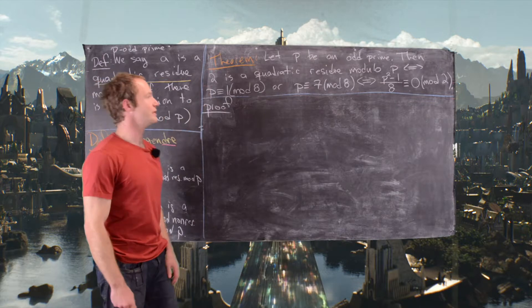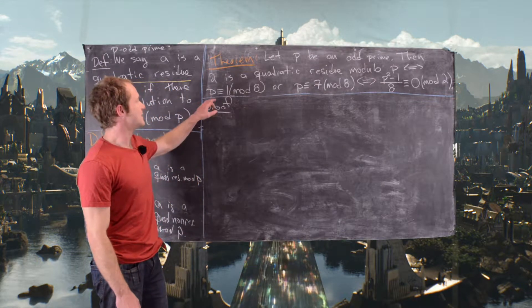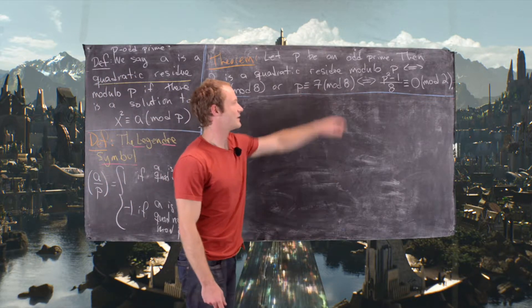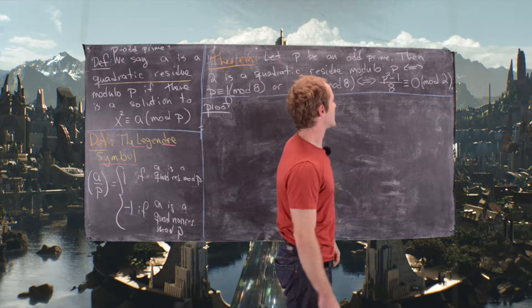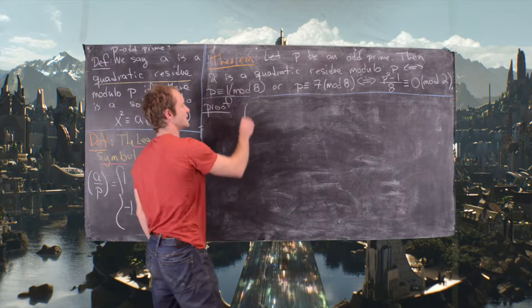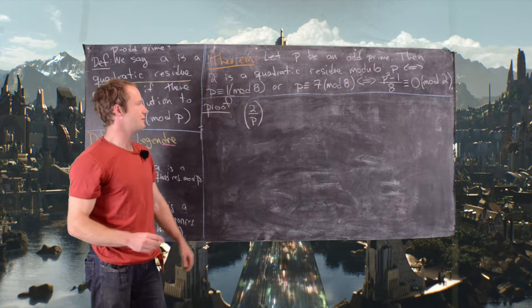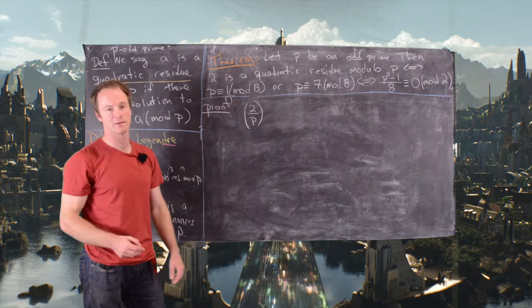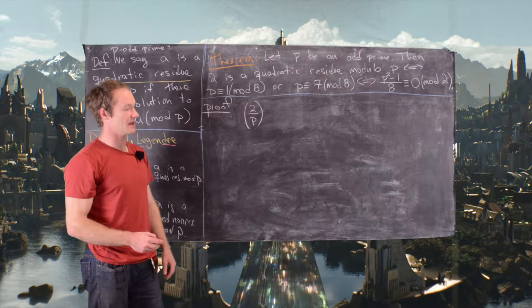The big theorem: if p is an odd prime, then 2 is a quadratic residue mod p if and only if p ≡ 1 (mod 8) or p ≡ 7 (mod 8). This is also equivalent to (p² − 1)/8 ≡ 0 (mod 2). We're going to use properties of the Legendre symbol to show that (2/p) = 1 if p ≡ 1 or 7 (mod 8), and −1 otherwise.